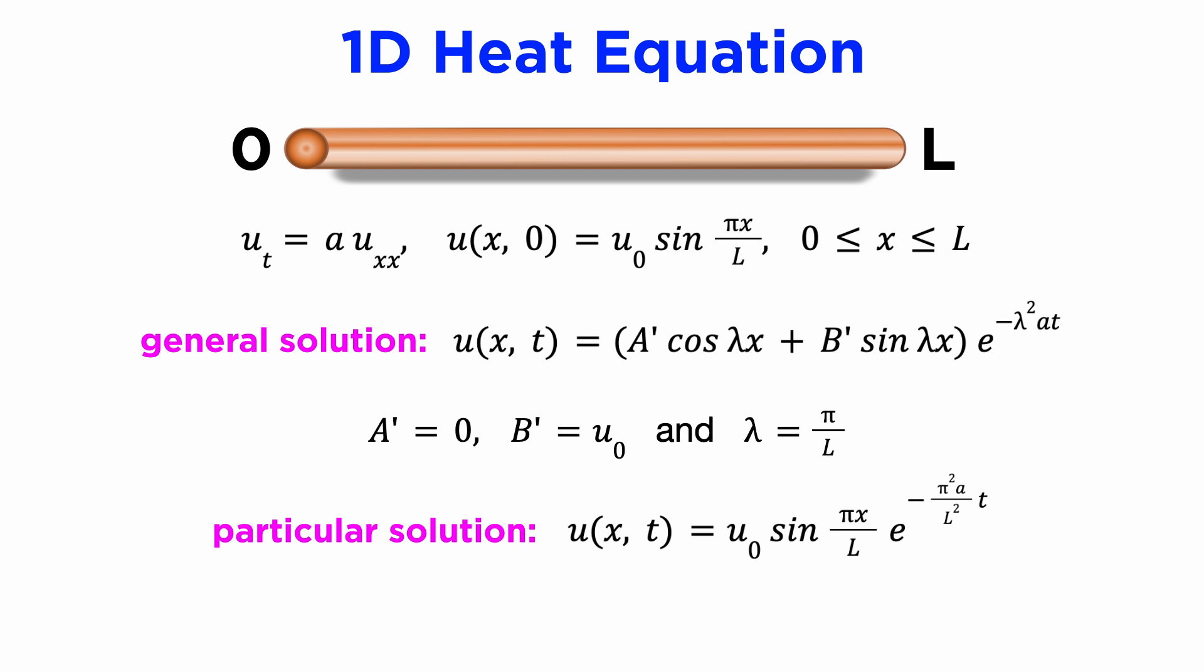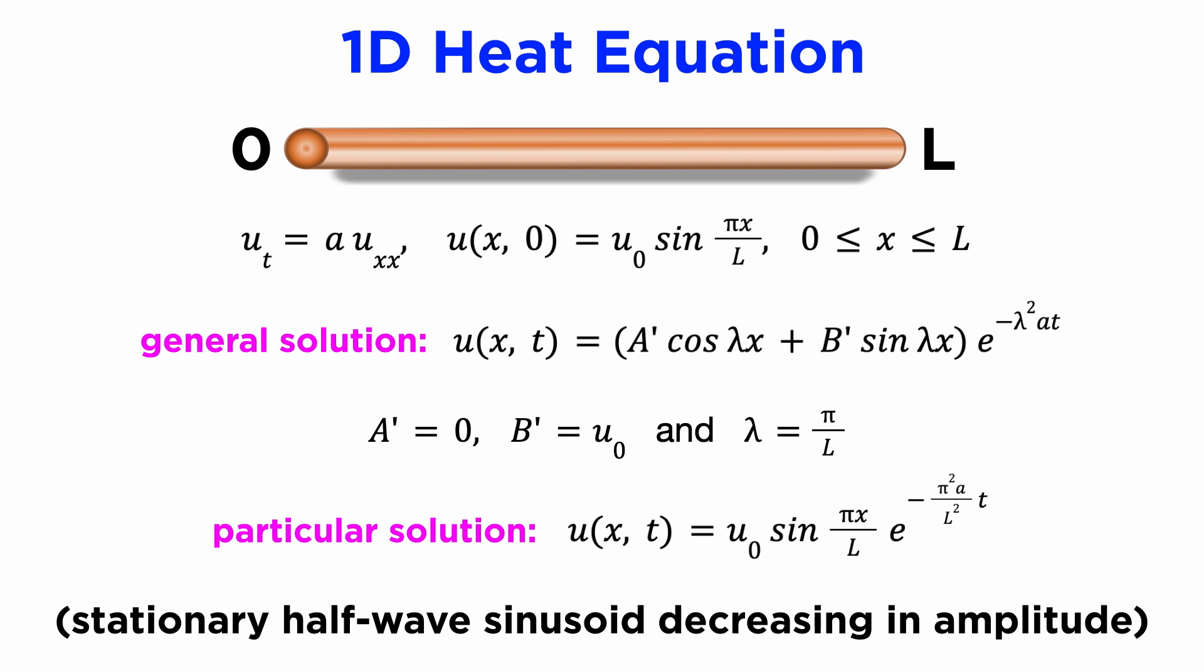Our particular solution is therefore u of x t equals u zero sine of pi x over L times e to the minus pi squared over L squared times a t, which takes the form of a stationary half-wave sinusoid that resembles the initial condition but steadily decreases in amplitude with time, falling to zero everywhere in the limit of infinite time. This models the gradual cooling of the bar as heat is lost through its ends, eventually coming into equilibrium with the environment at temperature u equals zero.